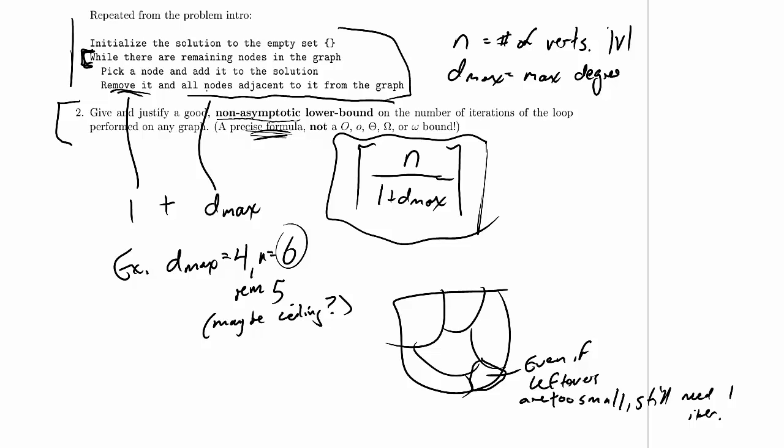And an independent set is a set of nodes that are not adjacent to each other in a particular graph. So we are ensuring that we will never add two nodes that are adjacent to each other, which means the thing we come up with is an independent set.